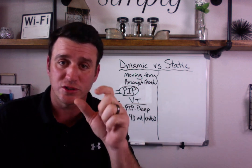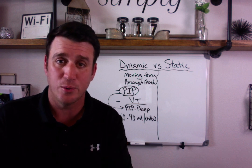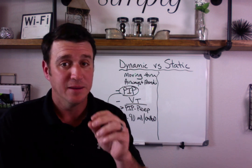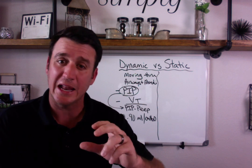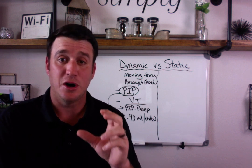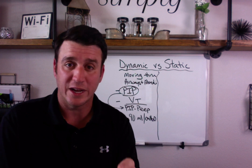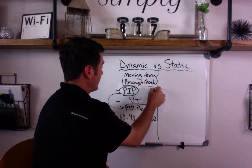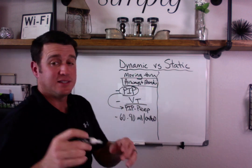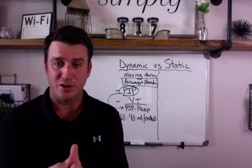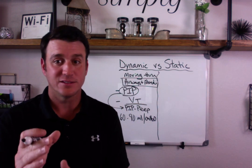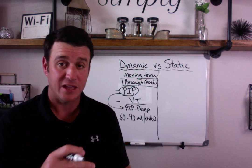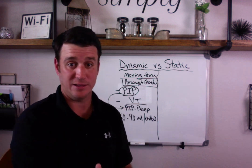I'm going to draw a square around something very important for students learning dynamic and static compliance — I'm going to draw a square around 'airways and alveoli,' because I like to learn based on word recognition. Now I'm going to stop with dynamic and switch over to static compliance.